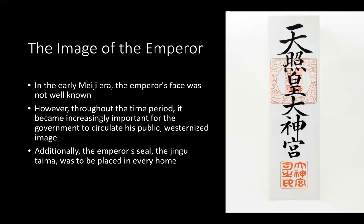During the early Meiji era, the emperor's face wasn't well known — he wasn't really a public figure. But as the era continued, it became more important for this figurehead and head of government to become a well-known person within Japan, to enforce the cult that had surrounded him. The government began to circulate his more Westernized public image into every home, and additionally spread the jingu taima — the emperor's seal, shown in the image — which was to be placed in every home in Japan.